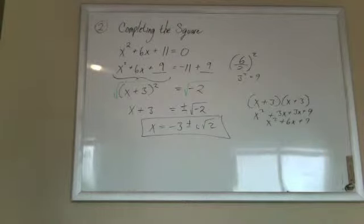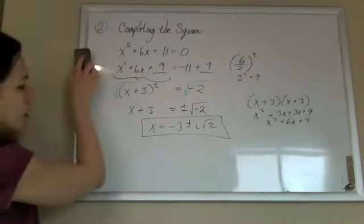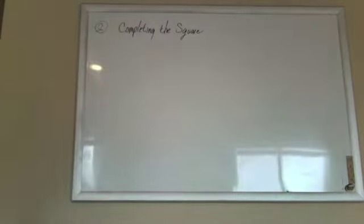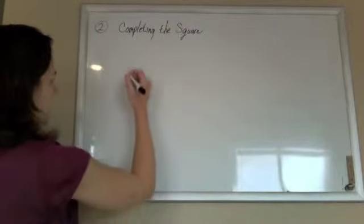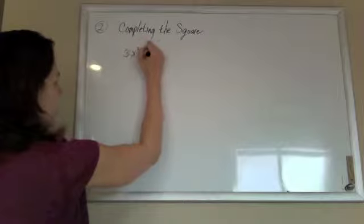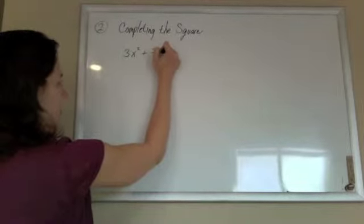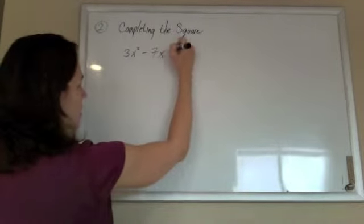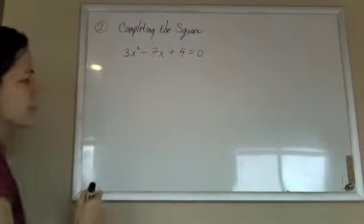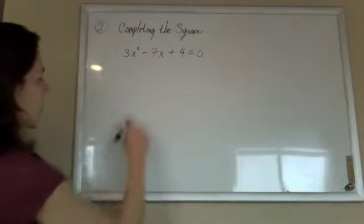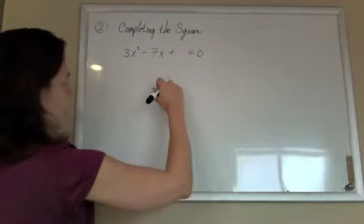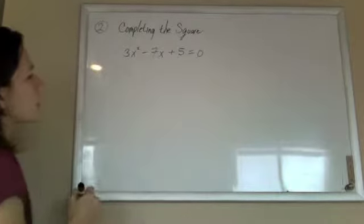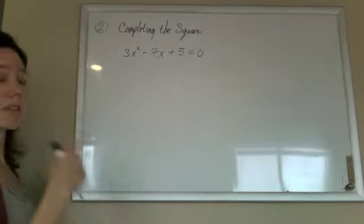So there's that example. And then we can do another example. What if we had 3x squared plus... we'll make them nasty. Do 3x squared minus 7x plus 5 equals 0. Oh, that one factors. Let's make that a 5 instead. So we would try to factor this, and it doesn't factor.